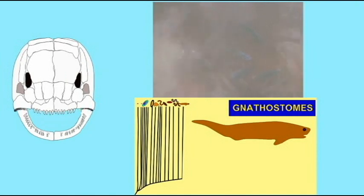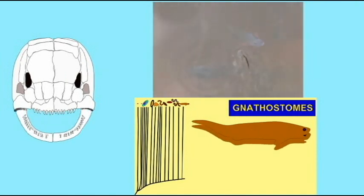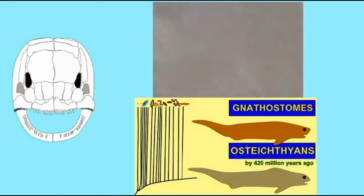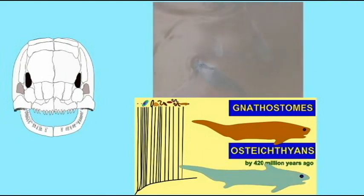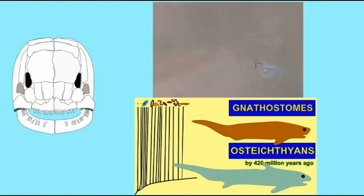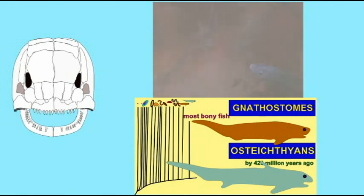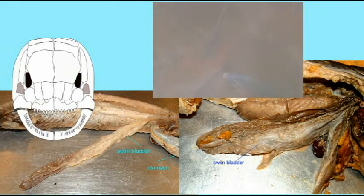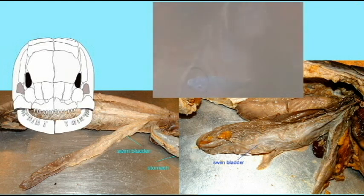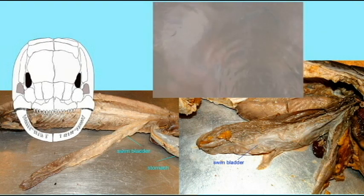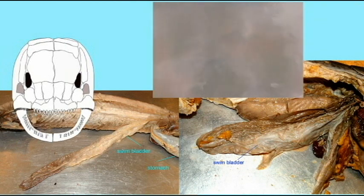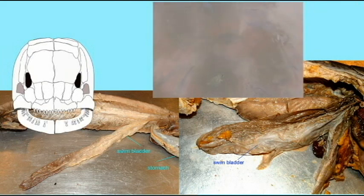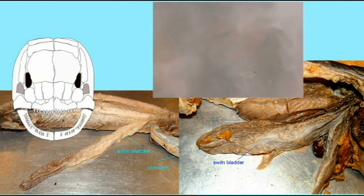Early Osteichthian fish evolved an outpocket of the digestive system, and this bag could take in air and be used to supplement the oxygen coming in from the gills. While most fish today use this as a swim bladder, it can be used as a breathing structure, which was apparently its original function. Sarcopterygian fish and tetrapods would modify this to become the lungs, but it was originally a bag in the early Osteichthian fish. Also, surfactant proteins and muscular mechanisms for gulping air evolved in the early Osteichthian fish that the tetrapods would later use in their respiratory systems.